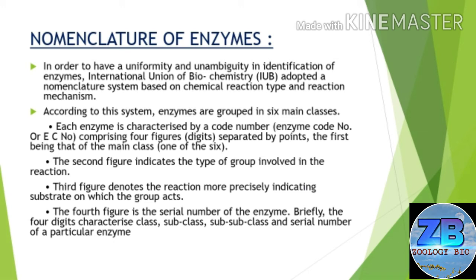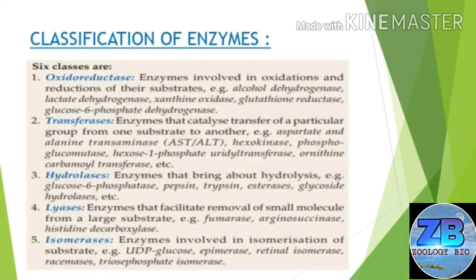Now, classification of enzymes — the six classes are: the first is oxidoreductases, enzymes involved in oxidation and reduction of their substrate. For example, alcohol dehydrogenase, lactate dehydrogenase, glutathione reductase, and glucose-6-phosphate dehydrogenase.